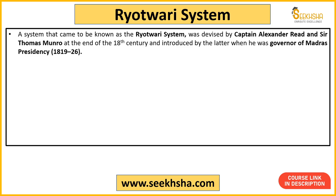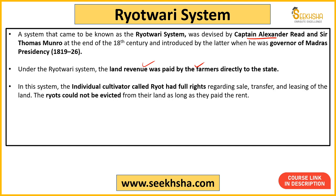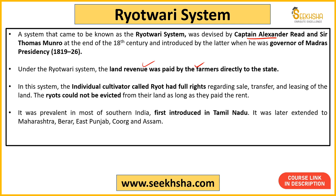To understand why: the Ryotwari system was introduced by Captain Alexander Read and Sir Thomas Munro in the late 18th century. Munro introduced it in the Madras Presidency. Under this system, land revenue was paid directly by the farmer — unlike the zamindari or permanent settlement system where the zamindar collected revenue and paid the British. Here, the middleman was removed. The cultivator had full rights — to sell land, transfer it, or lease it — and could not be evicted as long as rent was paid. It was most prevalent in South India, later extended to Maharashtra, Berar, Punjab, and Coorg.